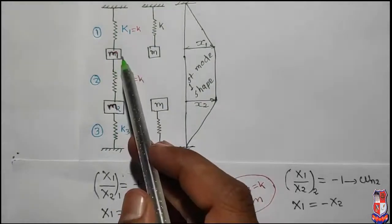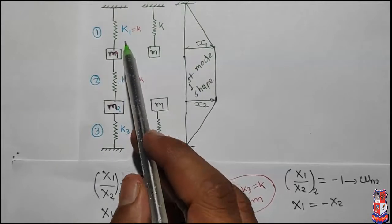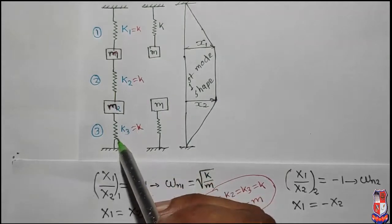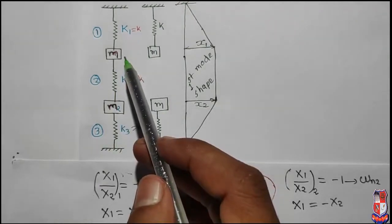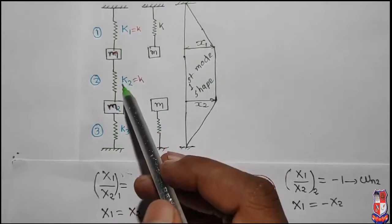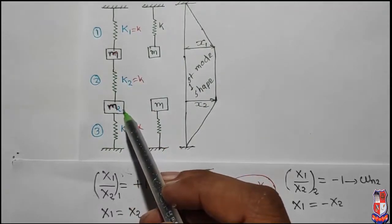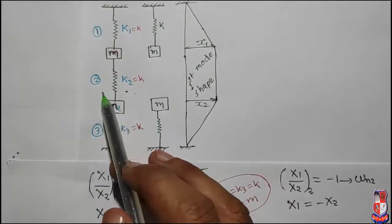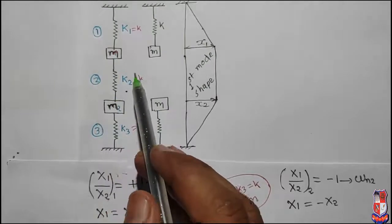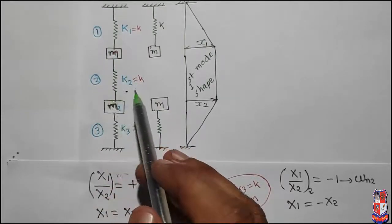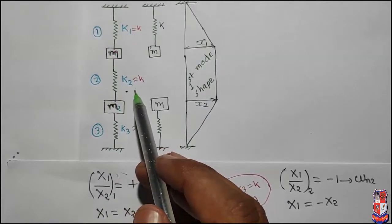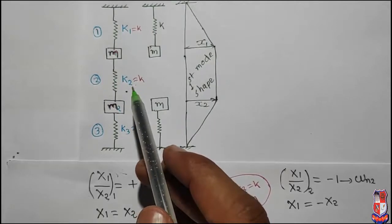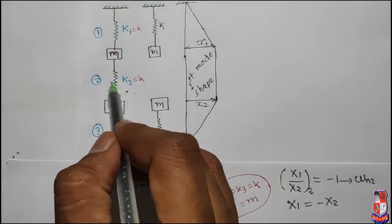In case 2, the amplitude of both masses is the same, but they move in opposite directions. If mass m1 moves with some distance in the upward direction, then mass m2 moves with the same distance in the downward direction, and vice versa. So in this case, spring 2 will experience compression and tension. We need to study the behavior of the spring individually. One point which will not experience either compression or tension is the middle point of the spring.